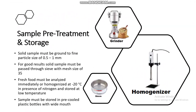Now for sample pre-treatment and storage: solid samples must be ground to a fine particle size of 0.5 to 1 millimeter for good results, and must be passed through a sieve with a mesh size of 35. Fresh food must be analyzed immediately or homogenized at minus 20 degrees centigrade in the presence of nitrogen and stored at low temperature. Samples must be stored in pre-cooled plastic bottles with a wide mouth.